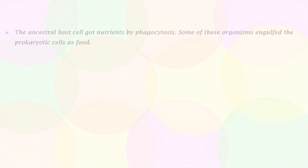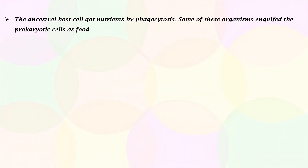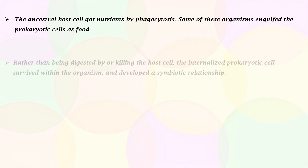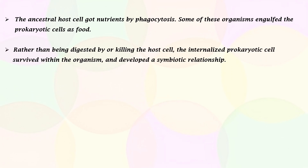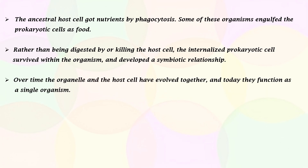The ancestral host cell got nutrients by a mechanism called phagocytosis. Some of these organisms engulfed the prokaryotic cells as food. Rather than being digested by or killing the host cell, the internalized prokaryotic cell survived within the organism and developed a symbiotic relationship. Over time, the organelle and the host cell have evolved together, and today they function as a single organism.